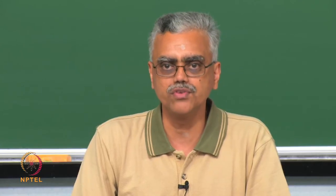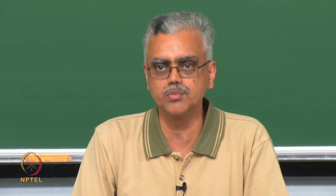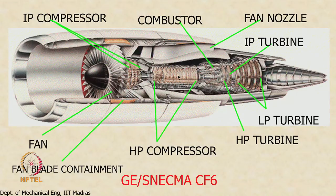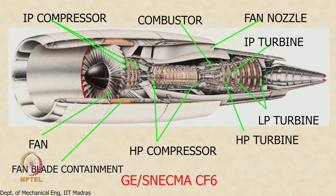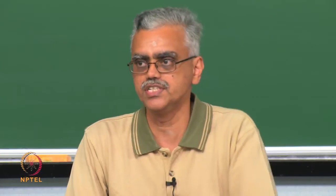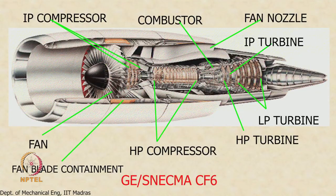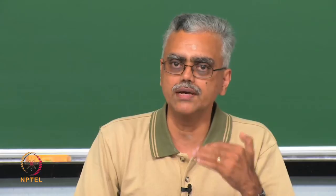A single-stage high pressure turbine drives 7 or 8 stages of high pressure compressor, because the blade loading coefficient of a turbine stage can be much higher than a compressor. Similarly, there is one IP turbine stage and multiple stages of the low pressure turbine, followed by the hot gas nozzle. Some air goes through this core engine — the core engine nozzle is called the hot nozzle — while the rest goes through the rotating and stationary fan blades and exits through the fan nozzle, which is the cold nozzle.